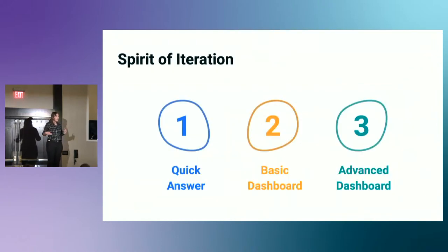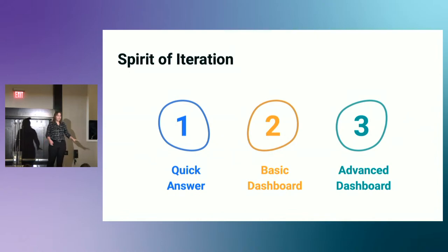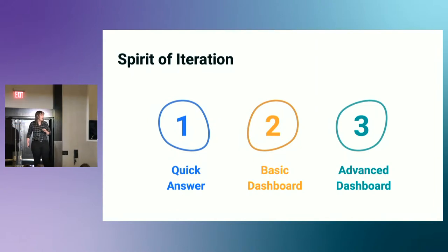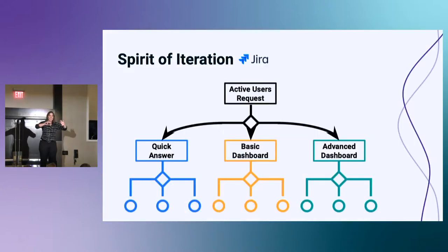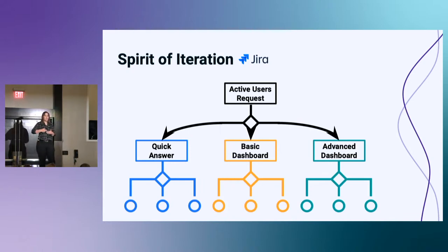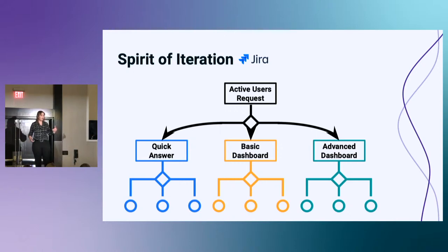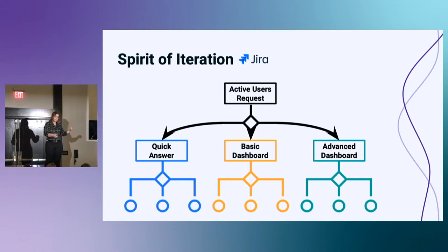Typically, an analyst will take that info and say, okay, I'm going to do three things: give you a quick answer right now, or do a basic dashboard in the next month, or do an advanced dashboard that's going to take six months or a year. When you're looking to move from analyst to analytics engineer, you take it one step further — you start saying, well, these are going to be my epics, and these are all my individual tasks and tickets. From there, you can start applying things like iteration and agile methodologies. But it all starts with really tracking your work at that individual task level.